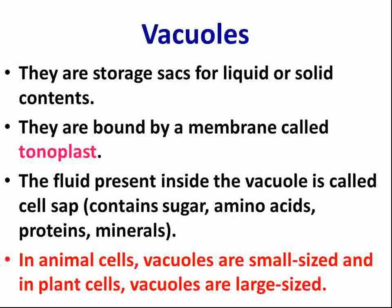The cell sap inside the vacuole may contain sugar, amino acids, proteins, and minerals. In animal cells, vacuoles are very small in size, whereas in plant cells, vacuoles are very large in size. This is a very important distinction.